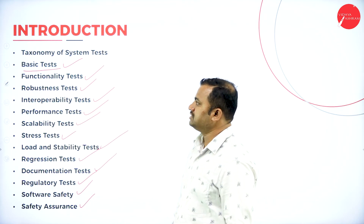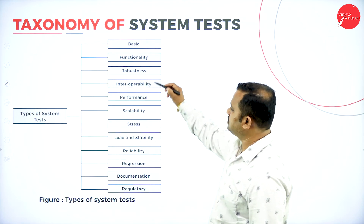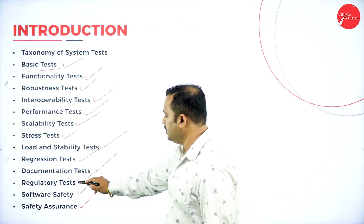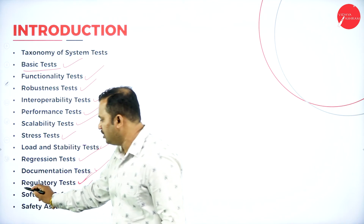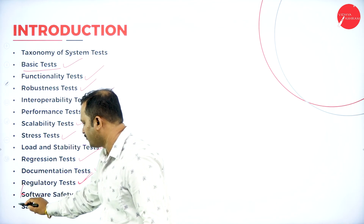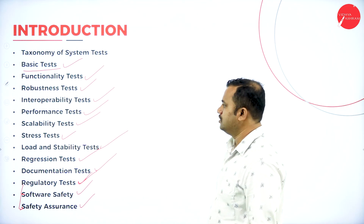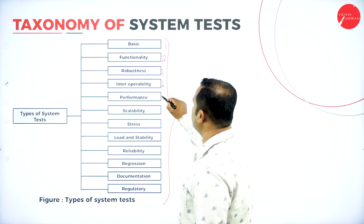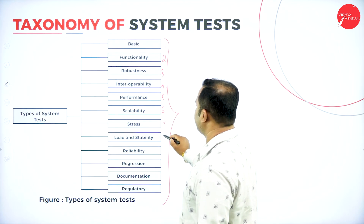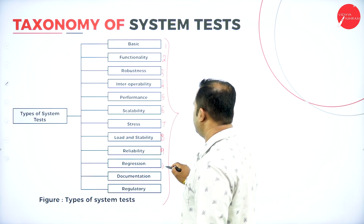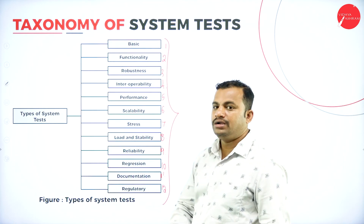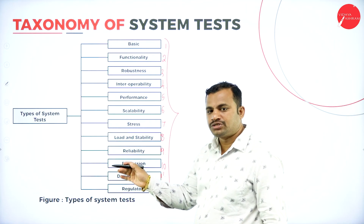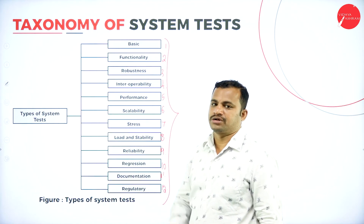The first one is the basic test, indicated in this pictorial representation, which includes documentation and regulatory. Under regulatory, you will come across software safety and software assurance. Totally 12 types of tests are performed before that software is delivered to the customer or to the stakeholder.